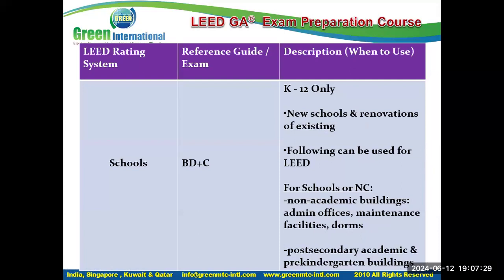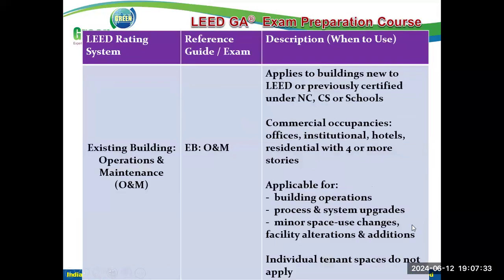Our admin offices are all under new construction, and all existing buildings will be under operation and maintenance. All other new construction types — core and shell, schools — can go for O+M. Commercial occupancies, institutional buildings, and hotels can all go for operation and maintenance.